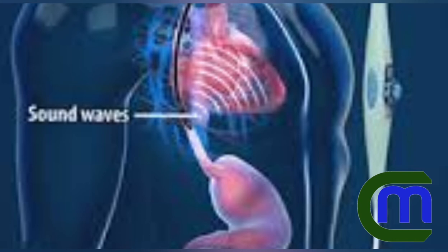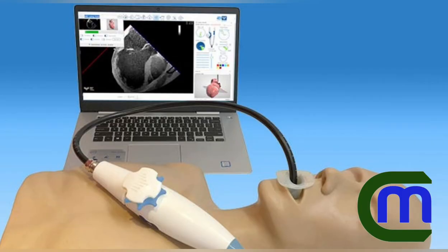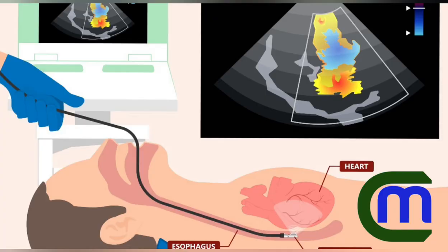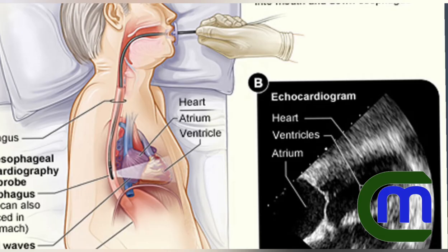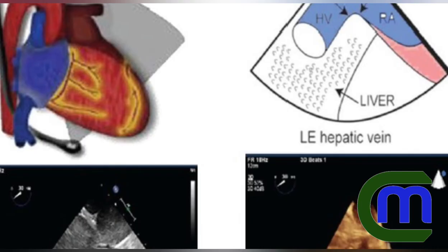Unlike a standard echocardiogram, in TEE the echo transducer that produces the sound waves is attached to a thin tube that passes through the mouth, down the throat, and into the esophagus. Because the esophagus is so close to the upper chambers of the heart, very clear images of those heart structures and valves can be obtained.